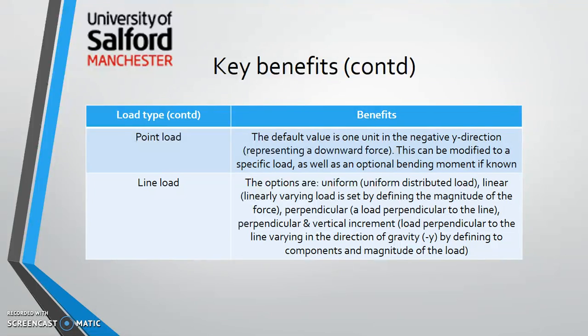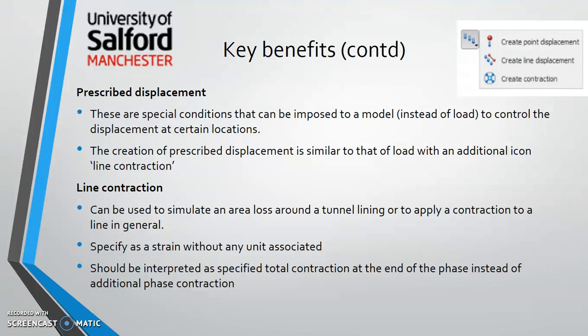A line load can be uniformly distributed, linear, or perpendicular, giving you different options for how that line load acts on your model. You also have the option to specify the value of your load. Similarly, another icon allows you to create prescribed displacement, which is created in a similar way to the load. You have three options: create a point displacement or a line displacement.